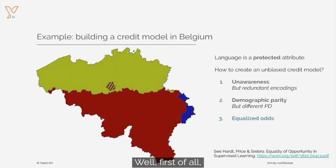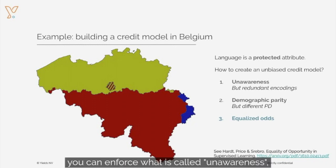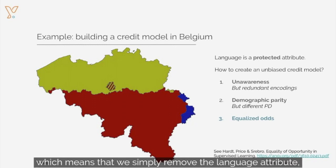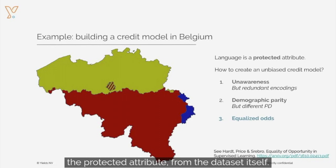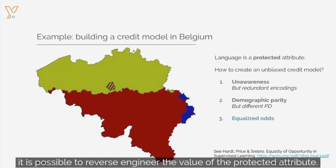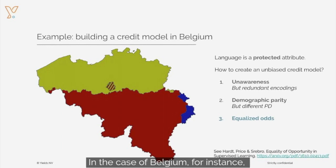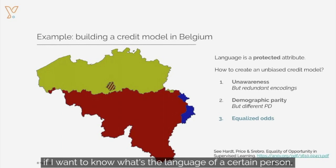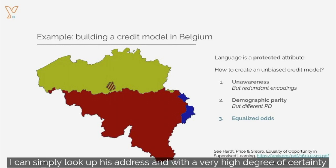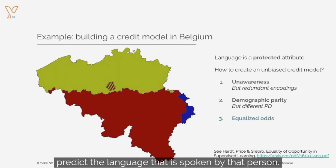How can you do this? Well, first of all, you can enforce what is called unawareness, which means that we simply remove the language attribute — the protected attribute — from the dataset itself. The problem with that is that very often it is possible to reverse engineer the value of the protected attribute. In the case of Belgium, for instance, if I want to know the language of a certain person, I can simply look up their address and with a very high degree of certainty predict the language spoken by that person. So unawareness is typically not a good guard against bias.